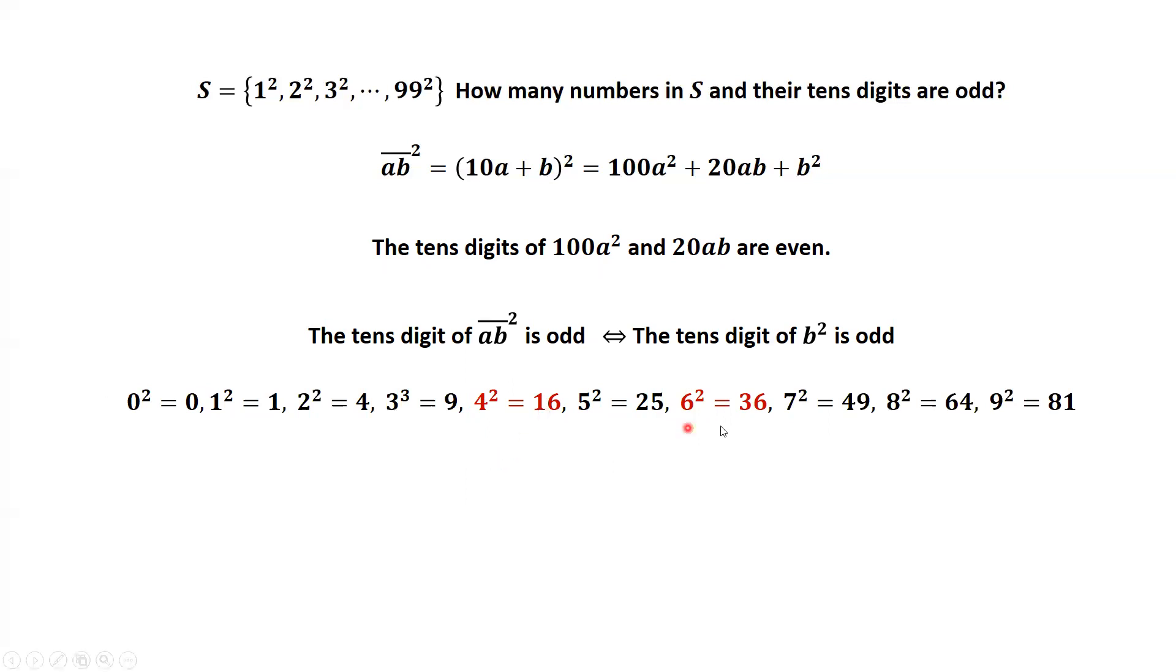Here's one, here's three. All others—zero, zero, one, four, nine—all tenth digits are even. So you can see two is even, four is even, six is even, eight is even.